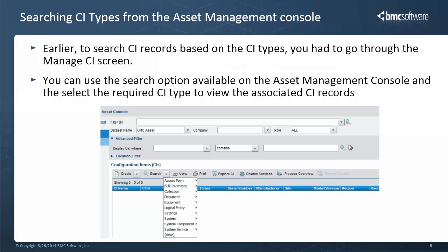With this release, a new search option is available in the Asset Management Console. This new search button allows you to search CI records based on the CI types. Earlier, to search CI records based on the CI types, you had to go to the Manage CI screen. Now you can use the search button on the Asset Management Console and select the required CI type to view the associated CI records.